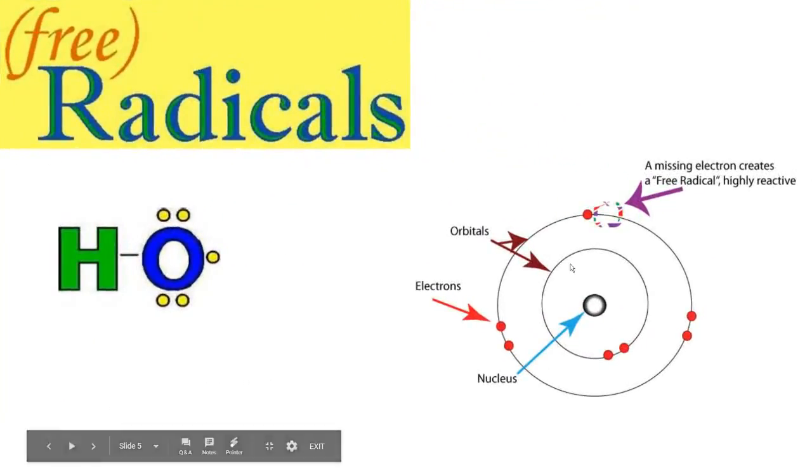A free radical is an atom, molecule, or ion that has an unpaired valence electron. A missing electron creates a free radical. Here you see a hydroxy free radical. Oxygen has six electrons in its valence shell as it belongs to the sixth group of the periodic table, but here an electron is missing, so this is a hydroxy free radical.